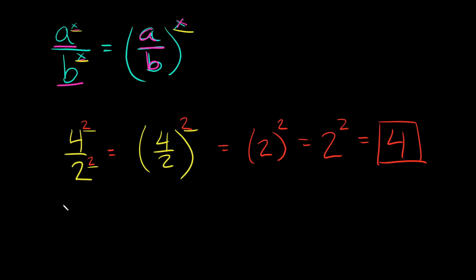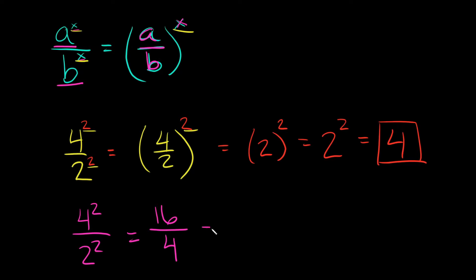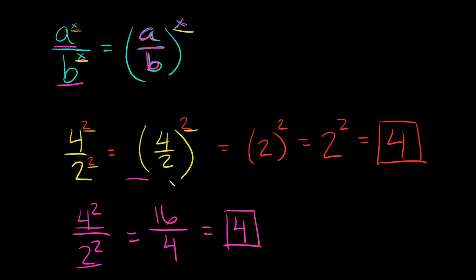There's another way you can solve these — it's a little easier with smaller numbers. For example, with four squared over two squared, you can just solve it straightforwardly: four squared is 16, two squared is 4, and 16 divided by 4 is also equal to 4. But if you have a much bigger exponent, the numbers get complicated and you'll want to use the formula method.